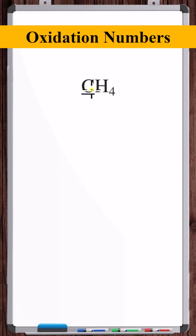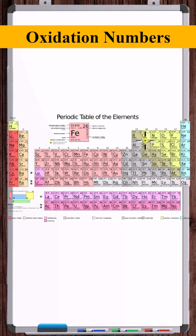The oxidation number rules do make a statement about hydrogen. The oxidation number of hydrogen can only be either plus one or minus one. If the hydrogen is bonded to something metallic, it'll be minus one; something non-metallic, plus one. As shown here, carbon is definitely non-metallic — it's not even a metalloid. Carbon is a non-metal.